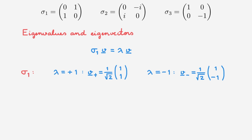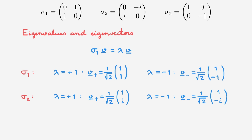I would encourage you to repeat the same exercise for the other two Pauli matrices, but we will simply quote the final results. For sigma 2, the eigenvalues are also +1 and -1, with eigenvector 1/√2·(1, i) for +1 and 1/√2·(1, -i) for -1. For sigma 3, the eigenvalues are also +1 and -1, with eigenvector (1, 0) for +1 and (0, 1) for -1.